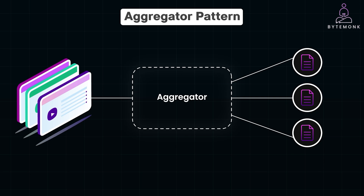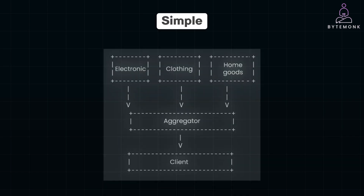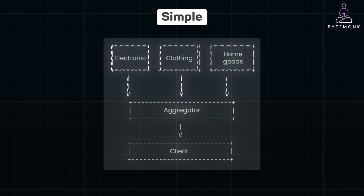Now that we understand the basics, let's explore the different types of aggregators: simple and complex. A simple aggregator handles straightforward scenarios where the process is linear and the data from each service can be directly combined without extensive processing. For example, imagine an online store's home page that displays various product categories. The aggregator service requests data from separate services handling electronics, clothing, and home goods, then compiles this information into a single organized layout for the client. The process is direct and doesn't require complex logic.